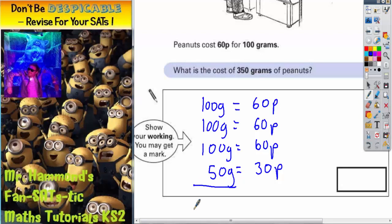Now this makes a total weight of 350 grams, which is what we're trying to get. So all we need to do now is find the total cost by adding them up.